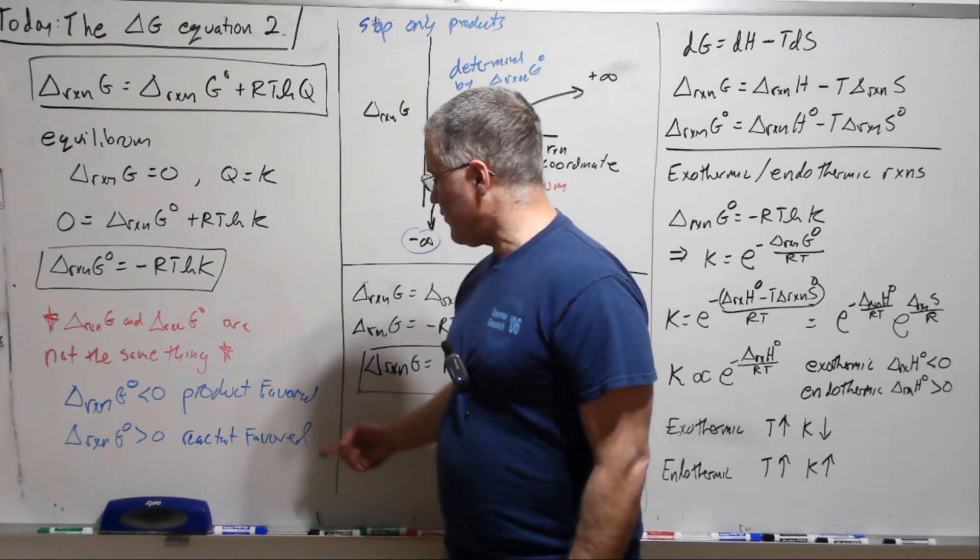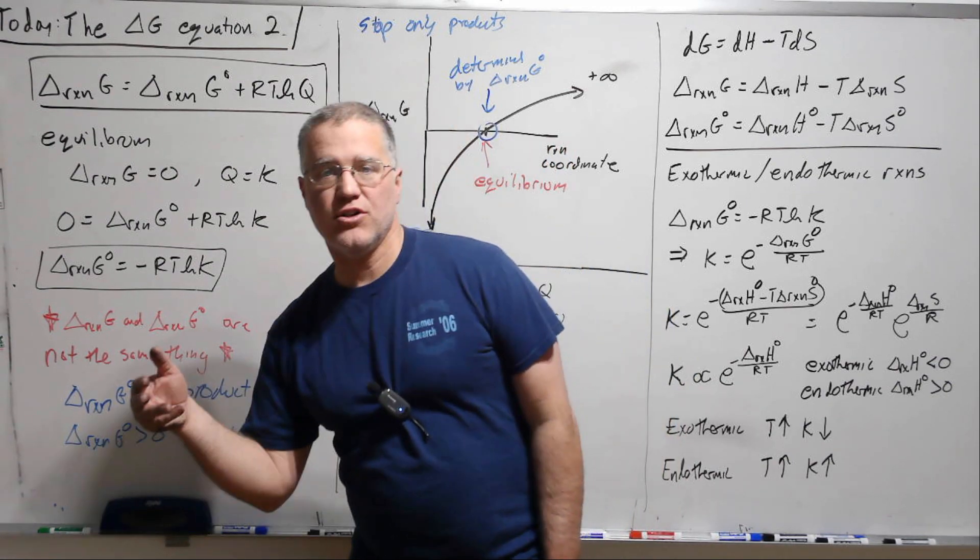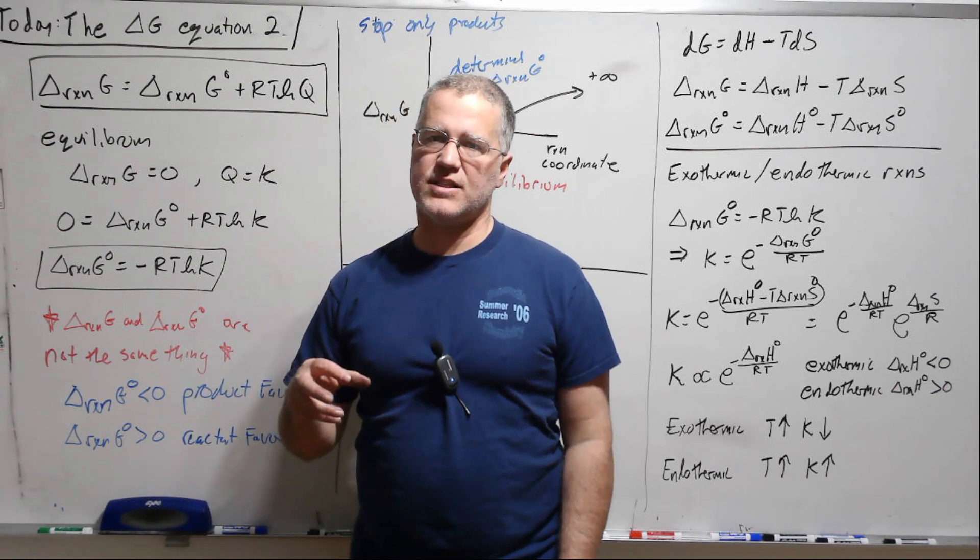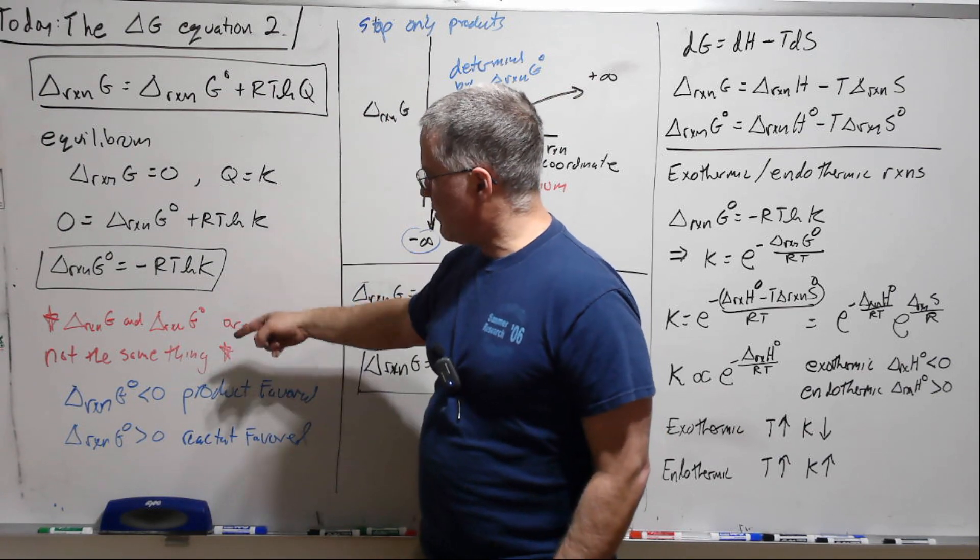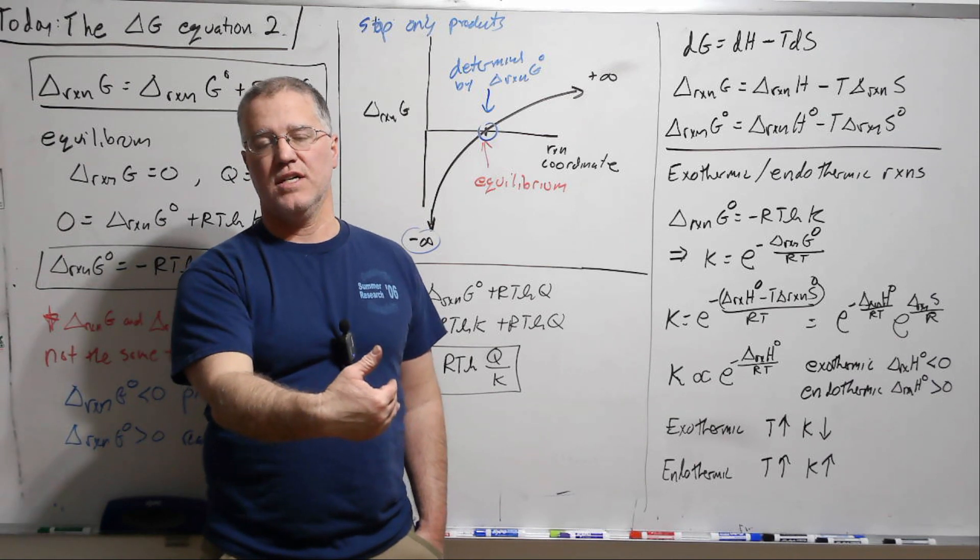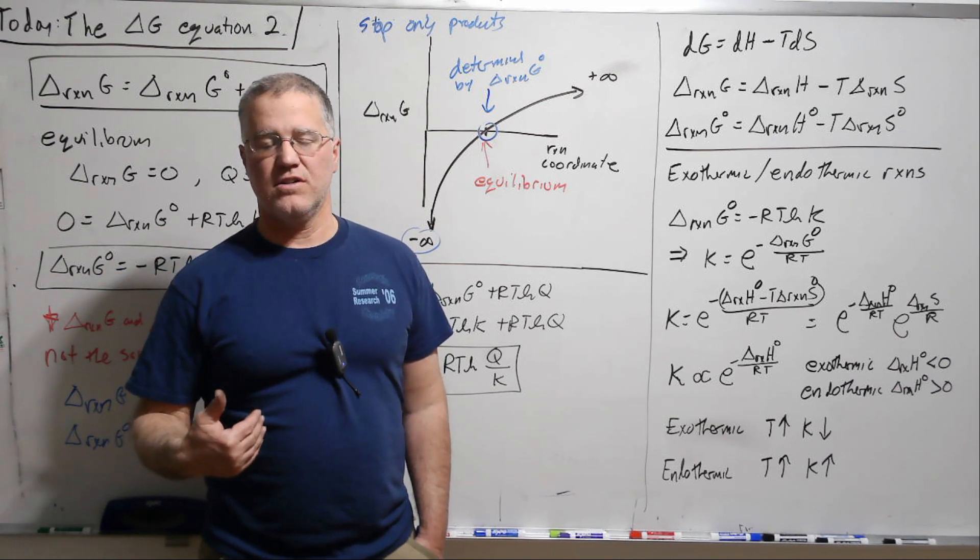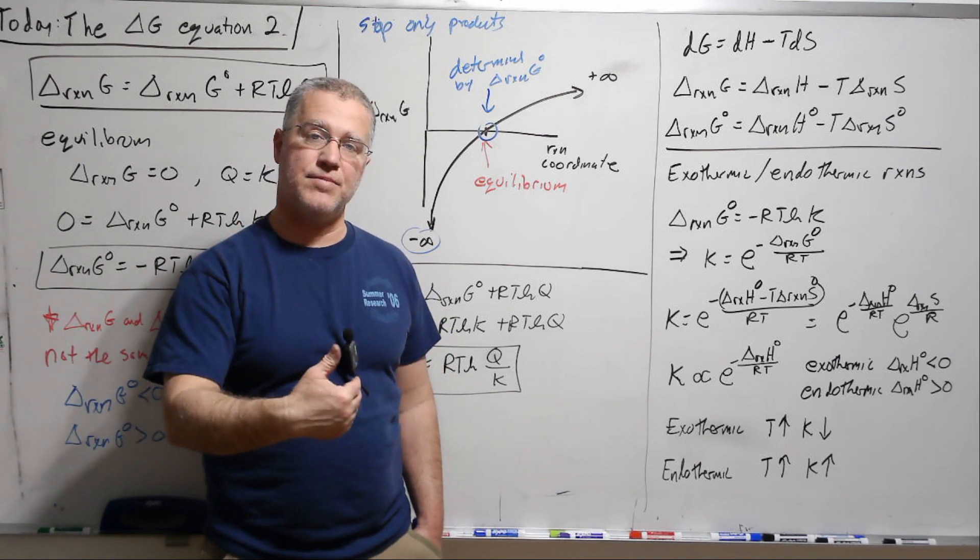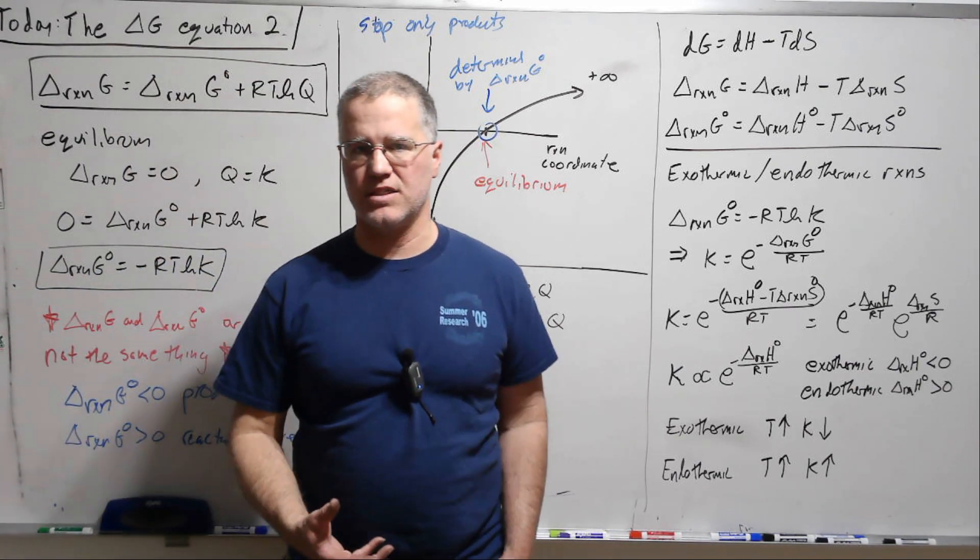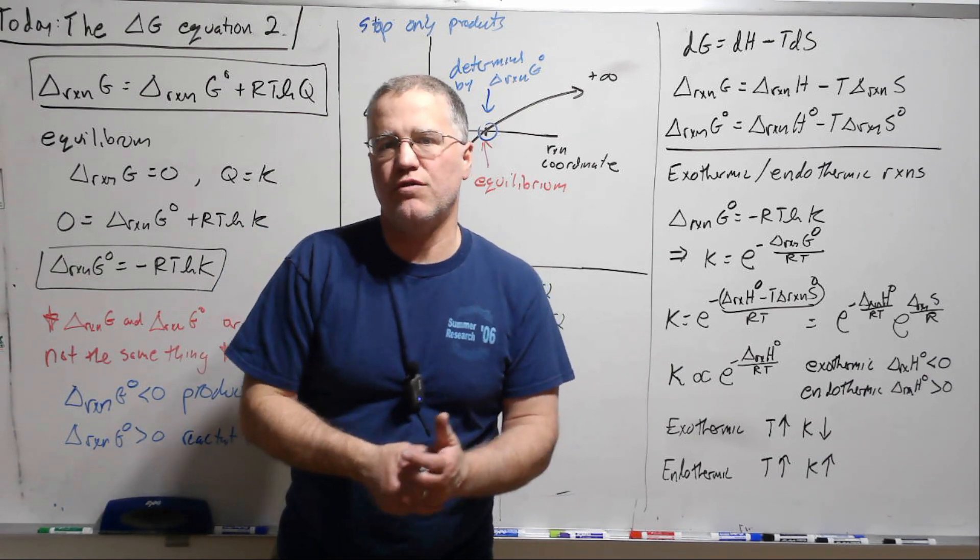It could very well be that we have a reactant favored reaction, but we're still in the situation where we're product favored. And this is what I think gets confused a lot, especially in biochemistry, where these get intermixed. There can still be a very strong forward driving force for a reaction, even if it's reactant favored. What it means to be reactant favored, it'll just stop when there's more reactants around than products. But if we're still on the reactant side of the equilibrium, there's going to be a driving force to go forward.